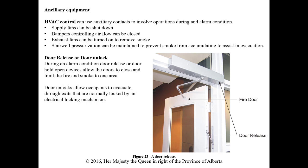Ancillary equipment can be controlled from the fire alarm control panel during an alarm condition. HVAC control uses an auxiliary contact to involve operation during an alarm: supply fans can be turned off, dampers controlling airflow can be closed, exhaust fans can be turned on to remove smoke, and stairwell pressurization can be maintained to prevent smoke from accumulating and assist in evacuation.